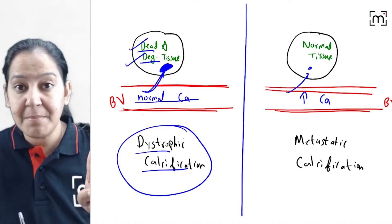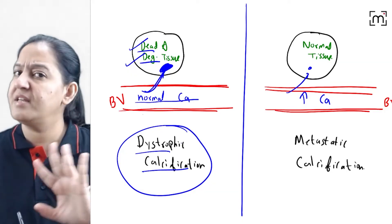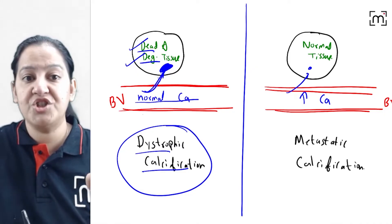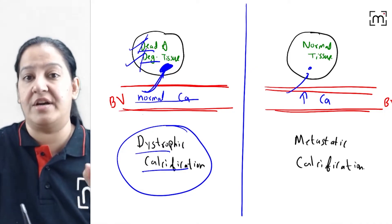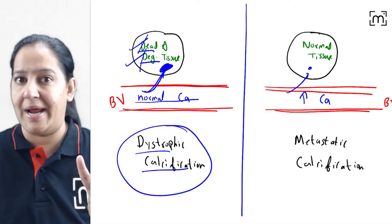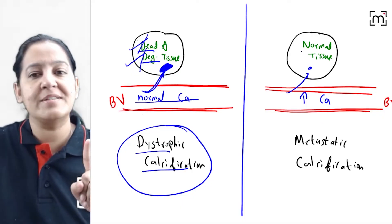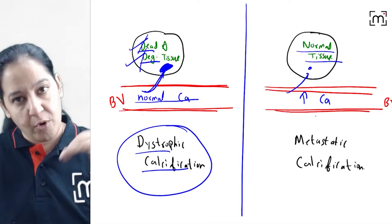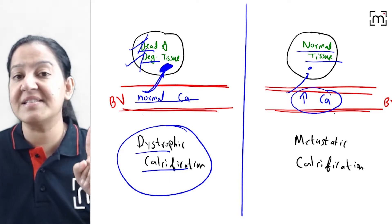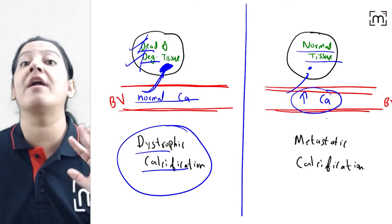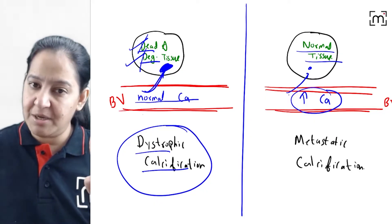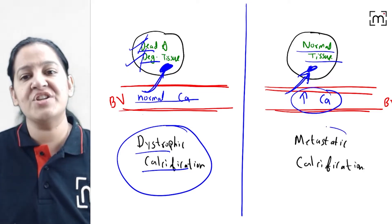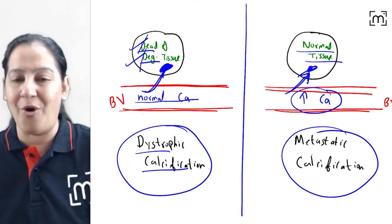In dystrophic calcification, the calcium metabolism is normal, but the tissue is either dead or degenerated. In the second diagram, the tissue is absolutely normal and healthy, but the problem is in the calcium level in the blood — there is hypercalcemia. The calcium levels are more than normal, and this excess calcium leaves the blood and gets deposited in the tissue. Such calcification is known as metastatic calcification.